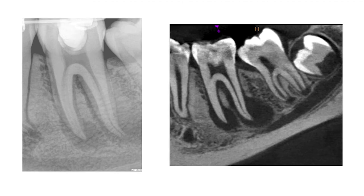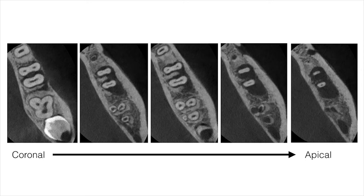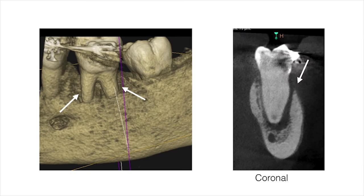A sagittal view of the CBCT scan demonstrated two large periapical radiolucencies around the mesial and distal roots, with the distal area extending right up into the furcation. This slide shows different slices of the CBCT scan through the axial plane, emphasizing the extent of the periapical pathology. A 3D reconstructed view and a coronal view also clearly illustrated the loss of the buccal bone plate, exposing the coronal two-thirds of the mesial and distal roots.